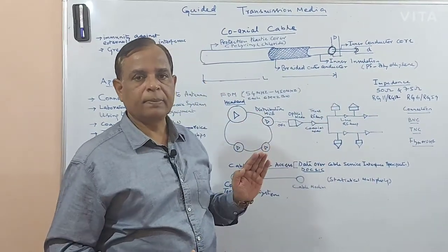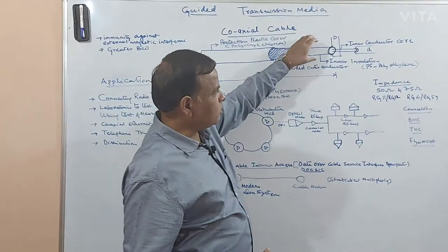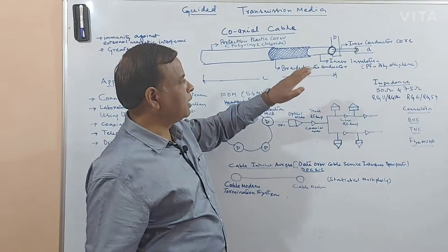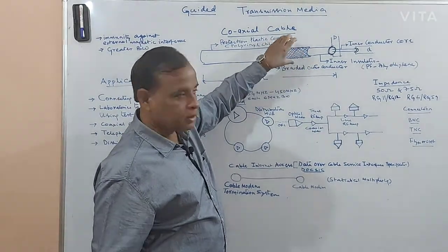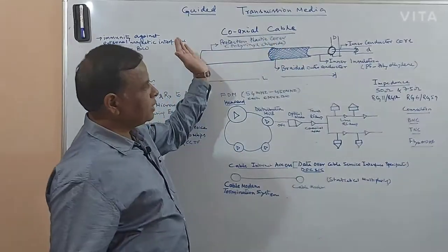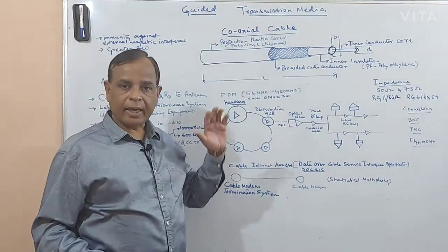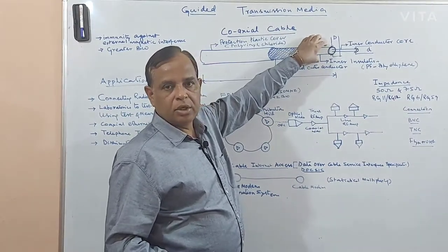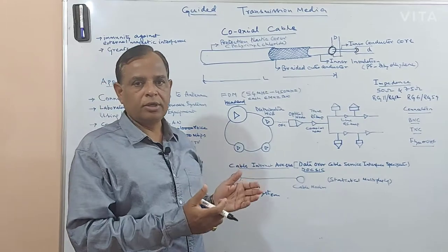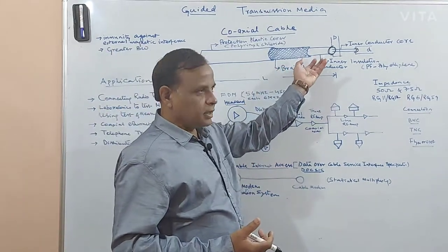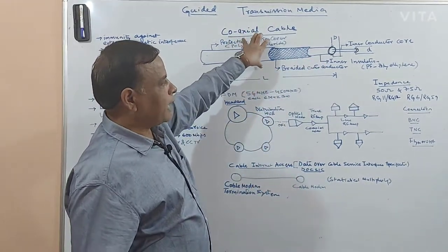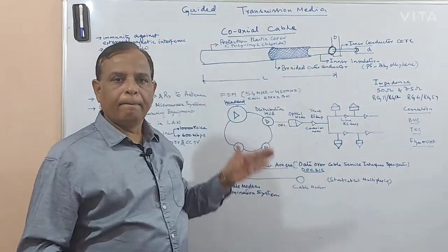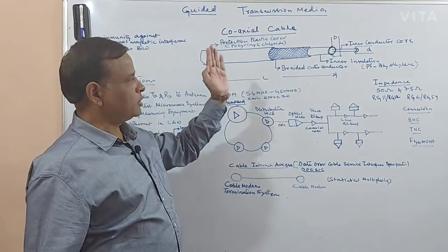There is no radiation loss. Because of this construction feature, any strong signal traveling through the cable is not radiated outside. And similarly, because of this mesh and outer covering, external interference is also not affecting the main signal. So there are two good features: the inner signal is not exposed outside, and external electromagnetic interference is not affecting the signal.